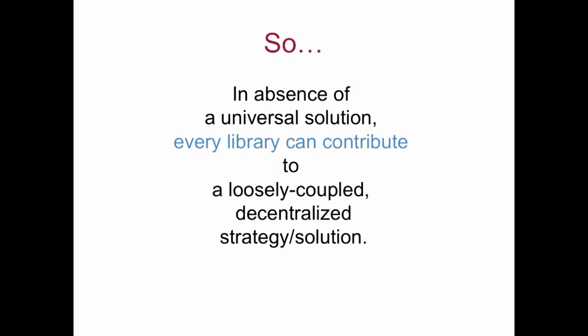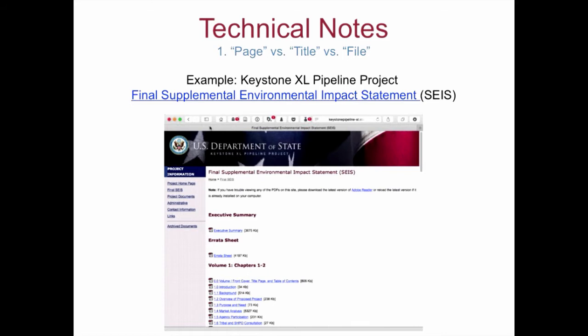Before I turn it over to him, I want to give you a bit of technical context to selecting born-digital government information. I have three technical notes for you — don't worry, they're not very technical. The first one is about terminology. We might want to talk about selecting a page or a title or even a file. But what do those terms mean? How do they relate to our selecting information? I use the final supplemental environmental impact statement of the Keystone XL pipeline project as an example.